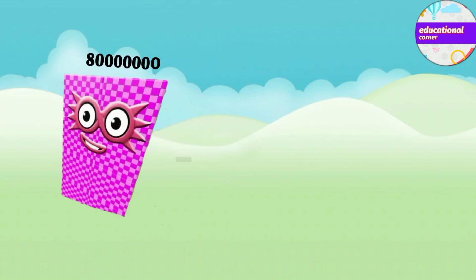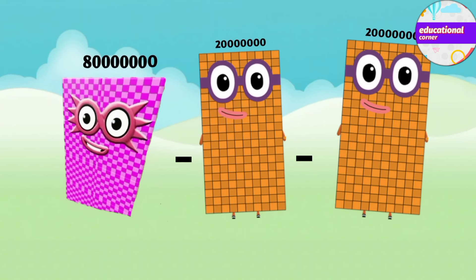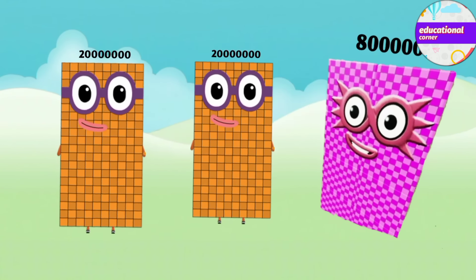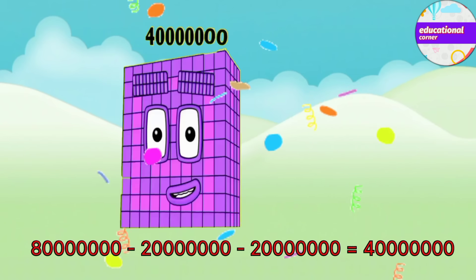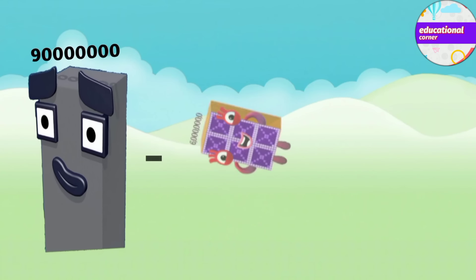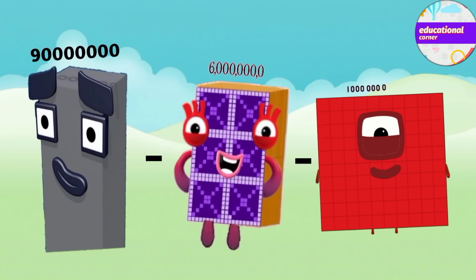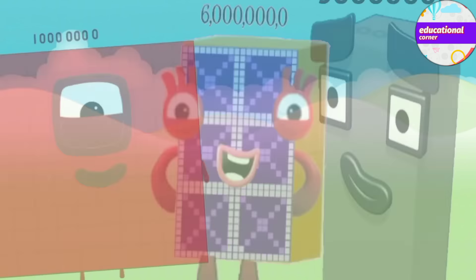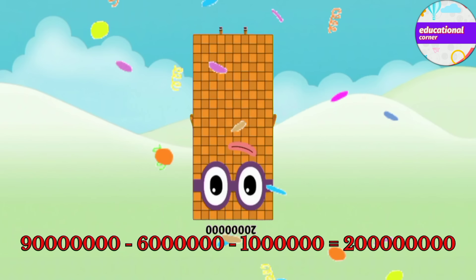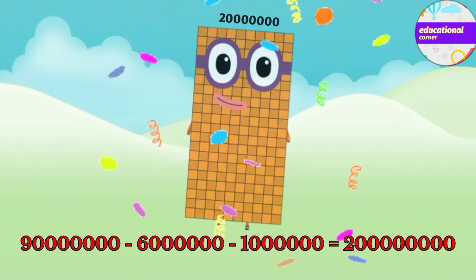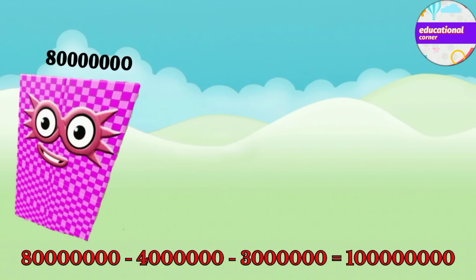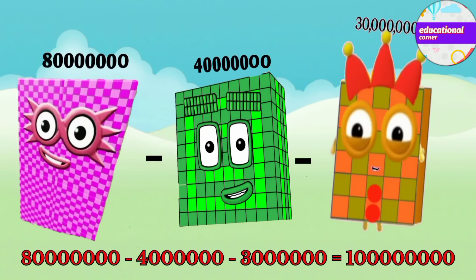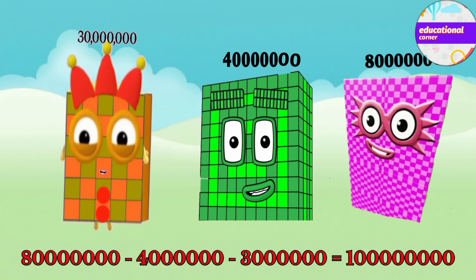80,000,000 minus 20,000,000 minus 20,000,000 equals 40,000,000. 90,000,000 minus 60,000,000 minus 10,000,000 equals 20,000,000. 80,000,000 minus 40,000,000 minus 30,000,000 equals 10,000,000.